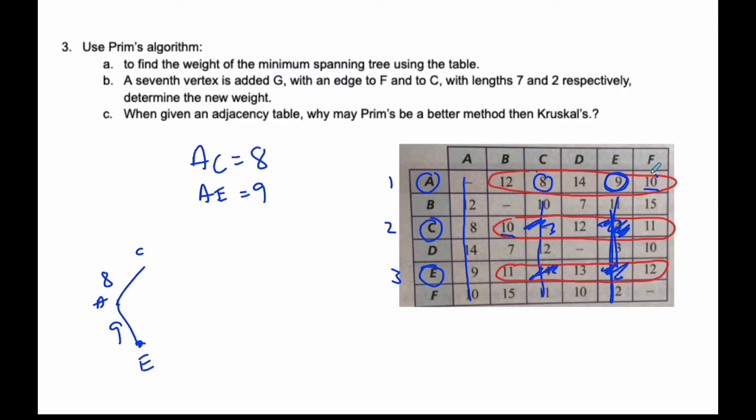I'm going to choose F. So A to F is 10. This was the fourth vertex I put on there. Again, I'm going to scratch this one out. Now I can also consider these values here to look at.